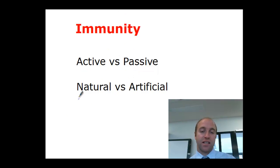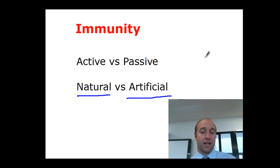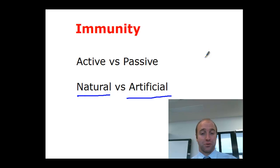The next words to consider are natural versus artificial. Natural means it's happening within our own body. Artificial means it's coming from outside of our own body. I like to think of artificial as mostly being administered with a needle — needles aren't very natural. So artificial is with a needle, and natural is our own body doing it.